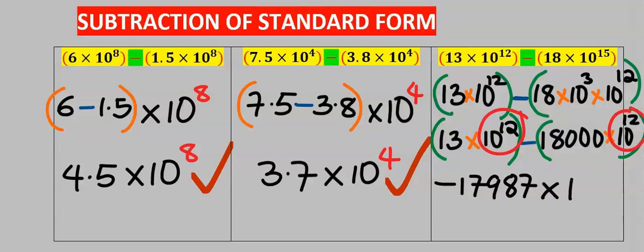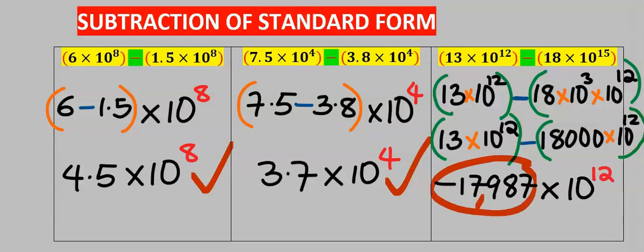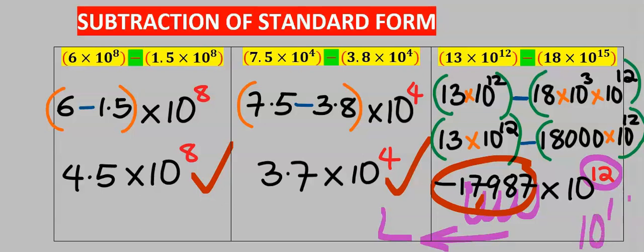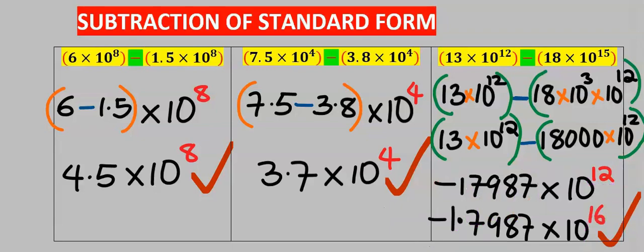Hence I will take only one, which is 10 to the power of 12. Next, this value is less than one, so I will move the decimal from the back one, two, three, four places. Because my movement is towards the left, I will add 4 to this 12 to become 10 to the power of 16, and this is our answer.